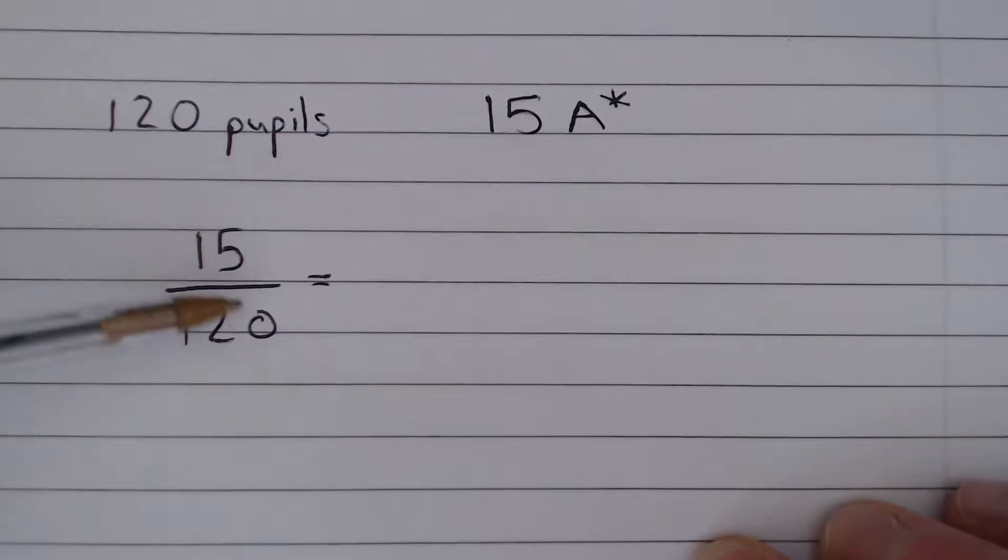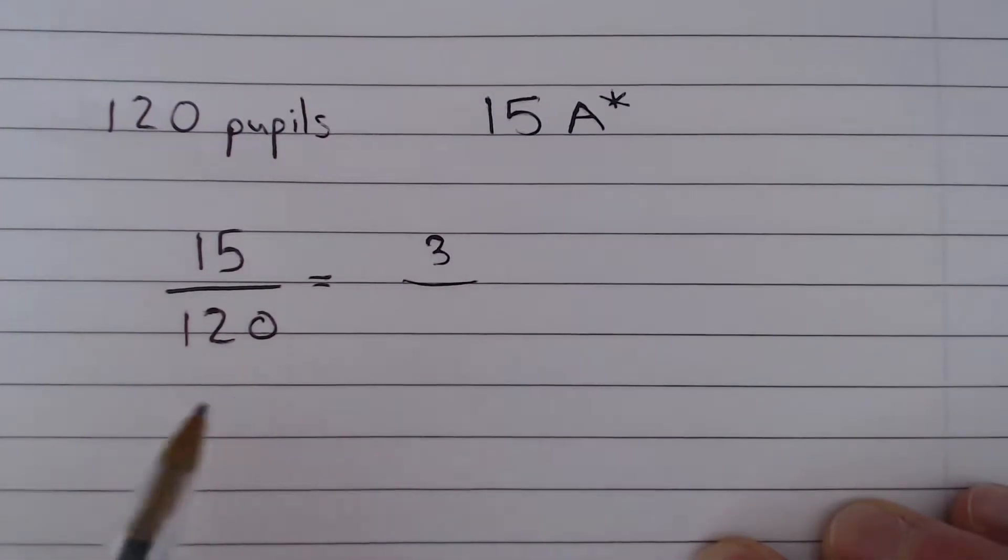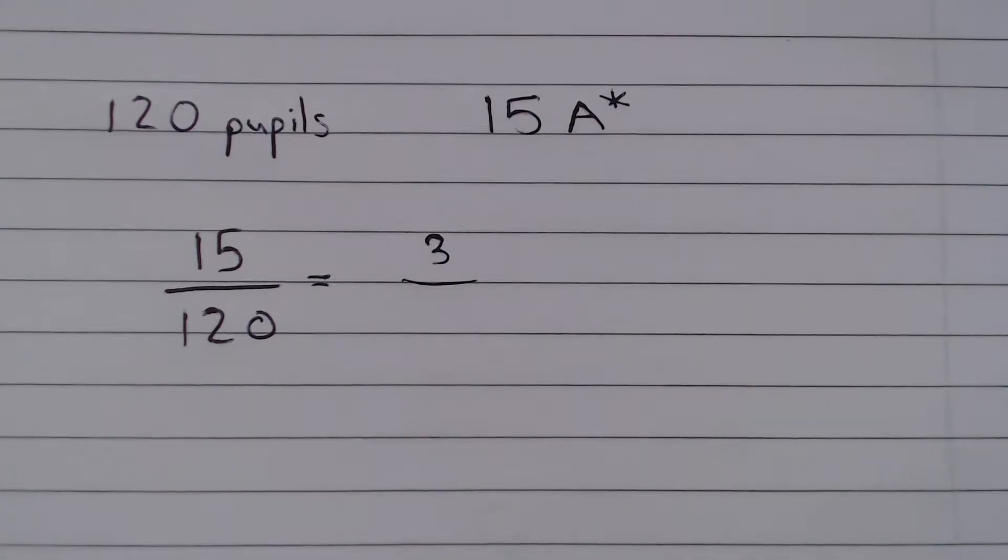Notice when a number ends in a 5 or a 0, like both of these numbers do, they're divisible by 5. 15 divided by 5 gives us 3. And to divide by 5, we multiply by 2, which is 240, and divide by 10 to get 24.